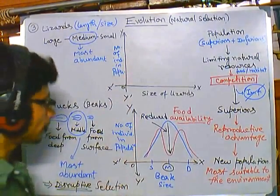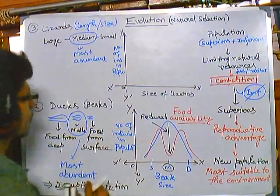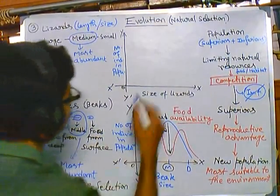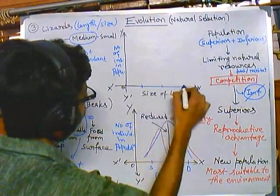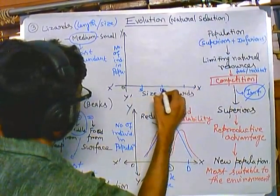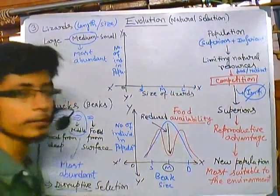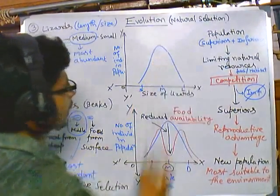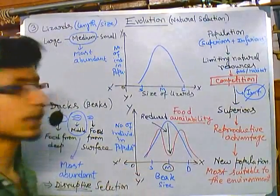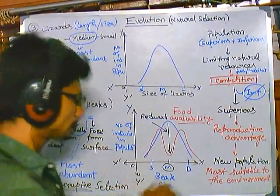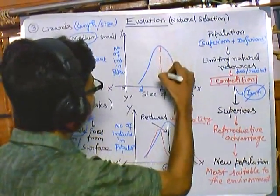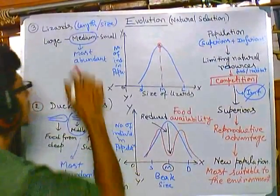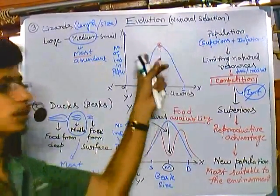The graph at the beginning shows that moderate or medium-sized lizards are the most abundant inside the population — we can clearly see this from the graph.